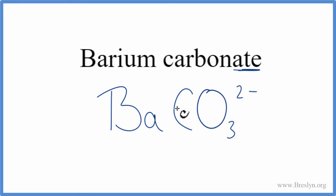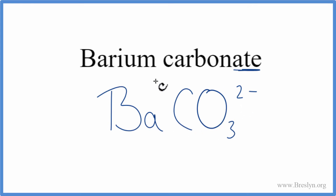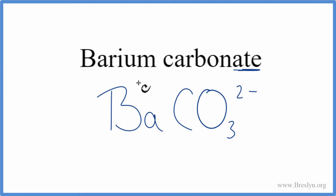Barium is a metal, and carbonate is made up of a group of nonmetals. We have metal and nonmetals — that's ionic — and we need to consider the ionic charges when we write the formula. On the periodic table, barium is in Group 2, which means it has a 2+ ionic charge.